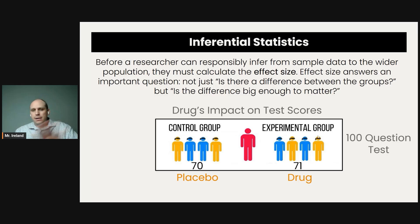Now let's say instead you got these results: the control group scored 70 and the experimental group scored 85. That's a 15 point difference. So that difference is probably big enough to matter. There's a big effect size there compared to a small effect size here.